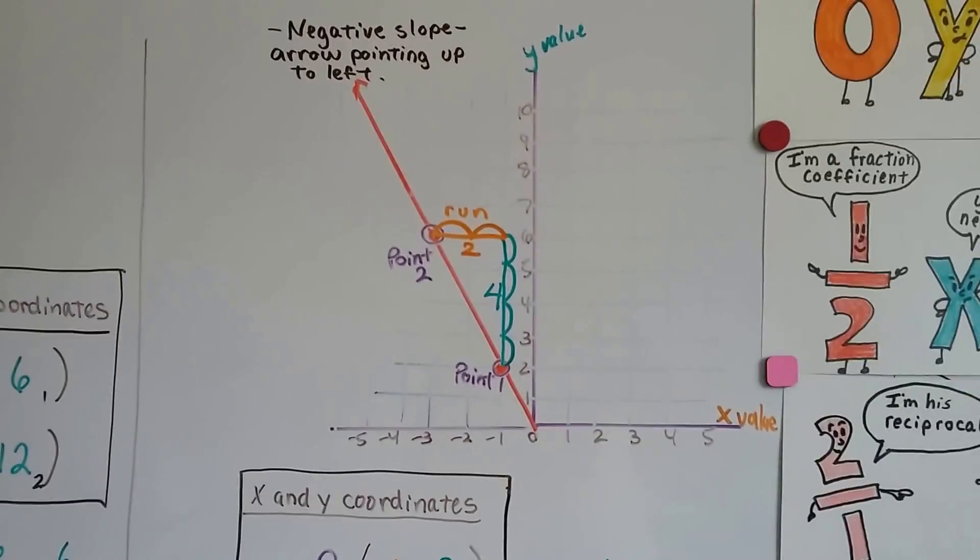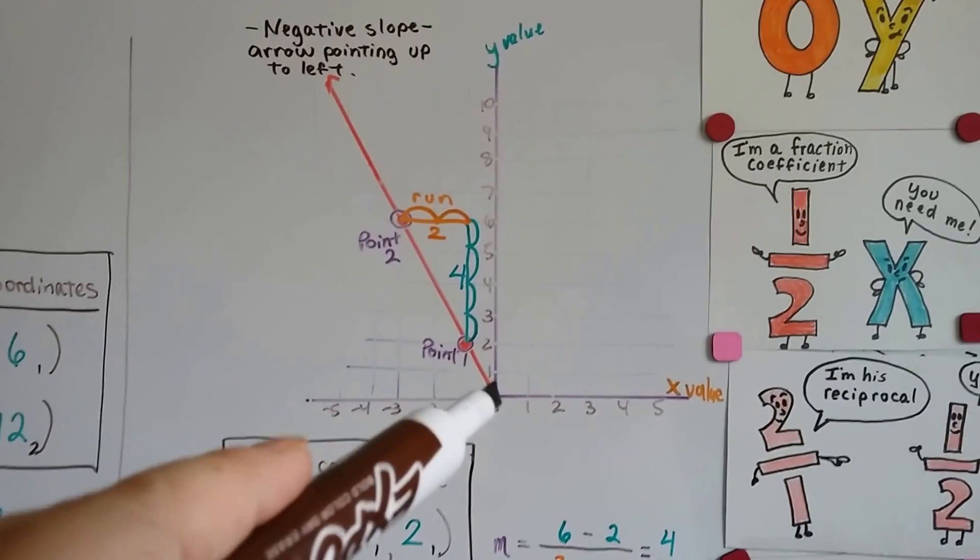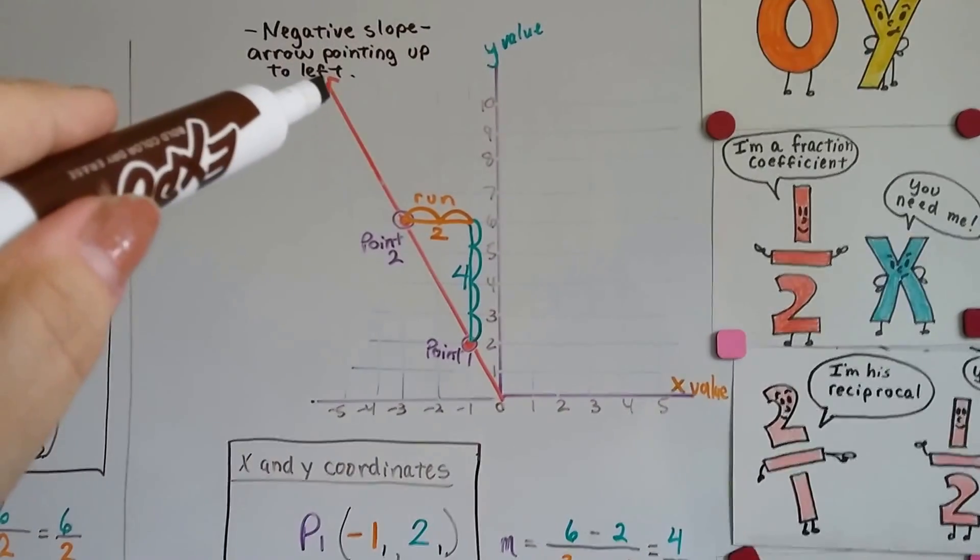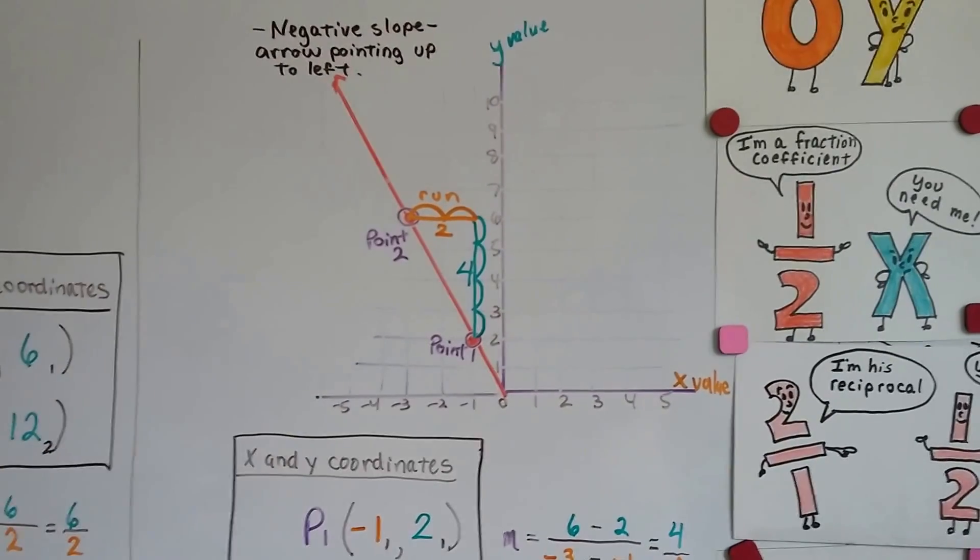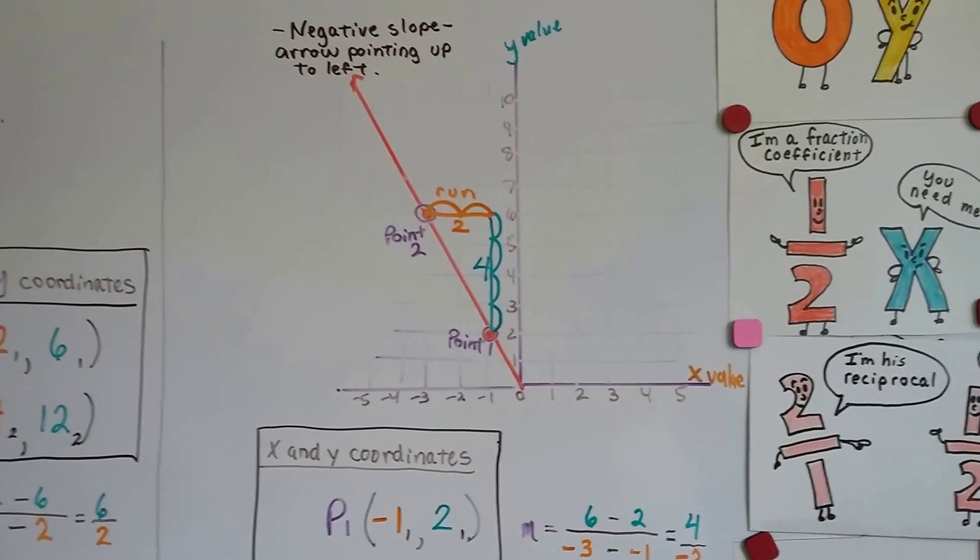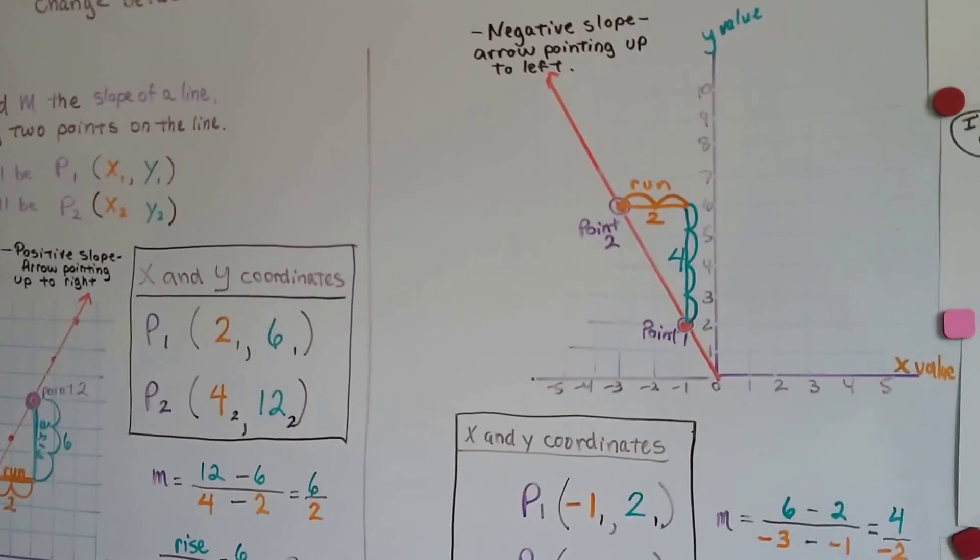And we could have just looked at the line and said, you know what, it's going up towards the left. It's negative. And this one's going up towards the right. It's positive.